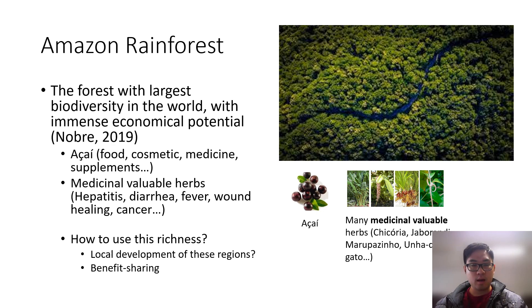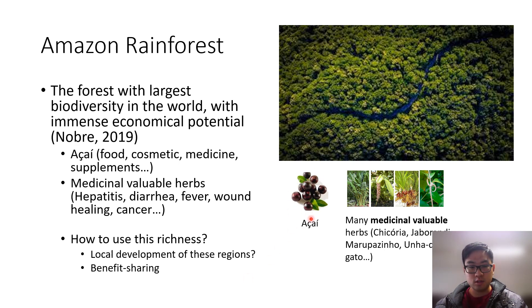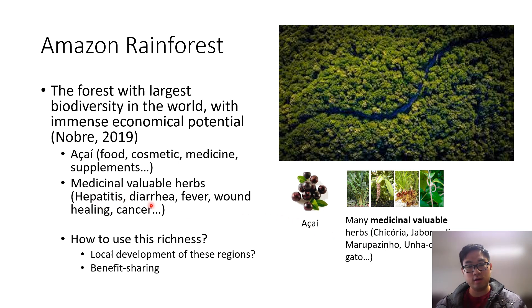A little introduction about the Amazon Rainforest. The Amazon Rainforest is the forest with the largest biodiversity in the world, with an immense economical potential. For example, we have the acai that is used to produce food, cosmetics, medicine, and supplements. And we have a lot of medicinally valuable herbs like dicoria, jaburanti, and others that can be used to produce medicines for hepatitis, diarrhea, fever, bone healing, and even cancer.